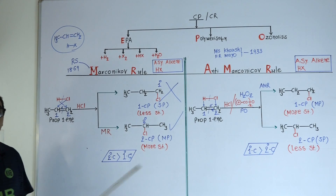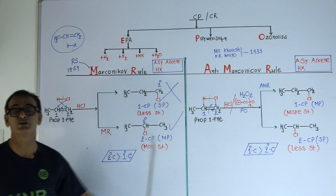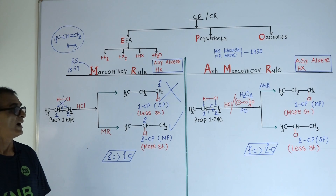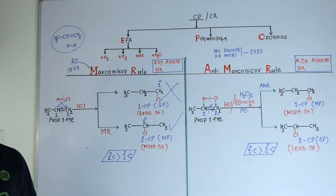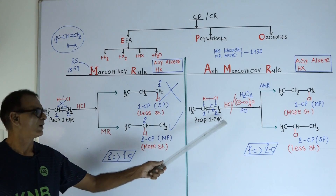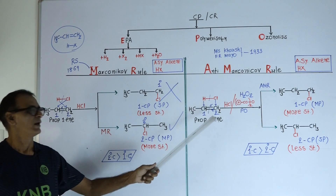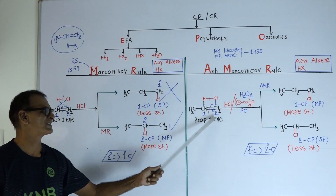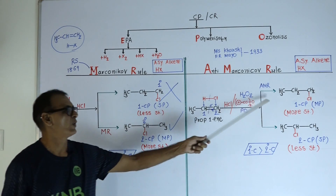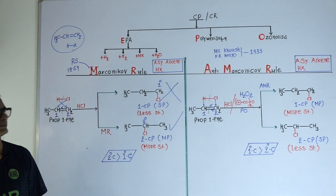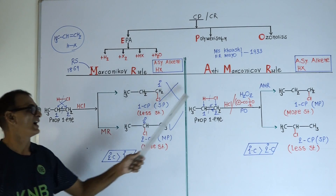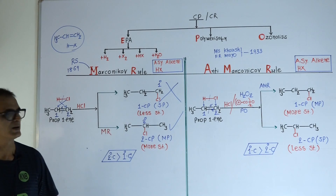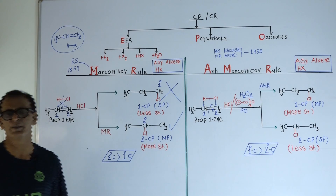But when this reaction is carried out in the presence of hydrogen peroxide or benzoyl peroxide as catalyst, a reverse reaction is observed. Here again there are two types of products possible. First: hydrogen attaches with the first carbon and chlorine attaches with the second carbon — giving 1-chloropropane. Second possibility: hydrogen attaches with the second carbon and chlorine attaches with the first carbon — giving 2-chloropropane.